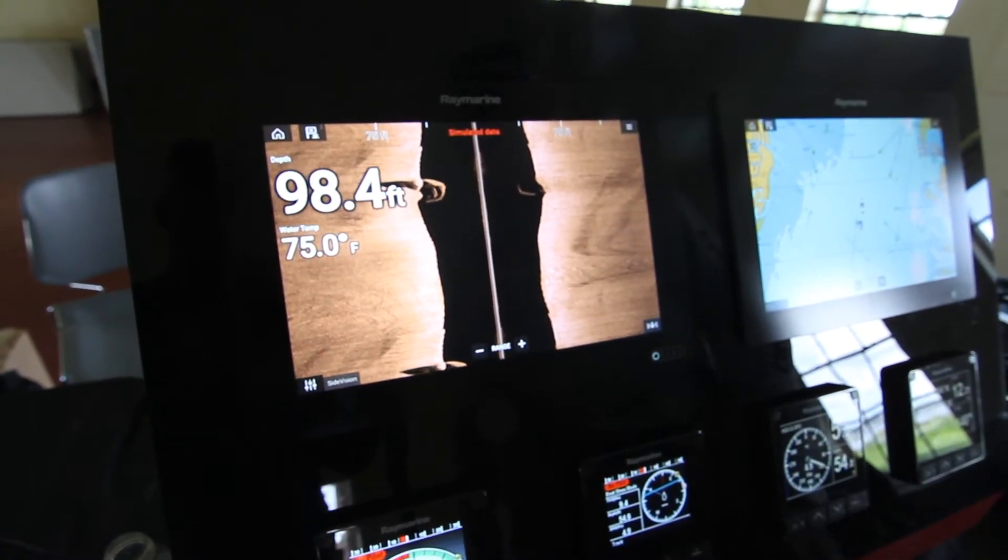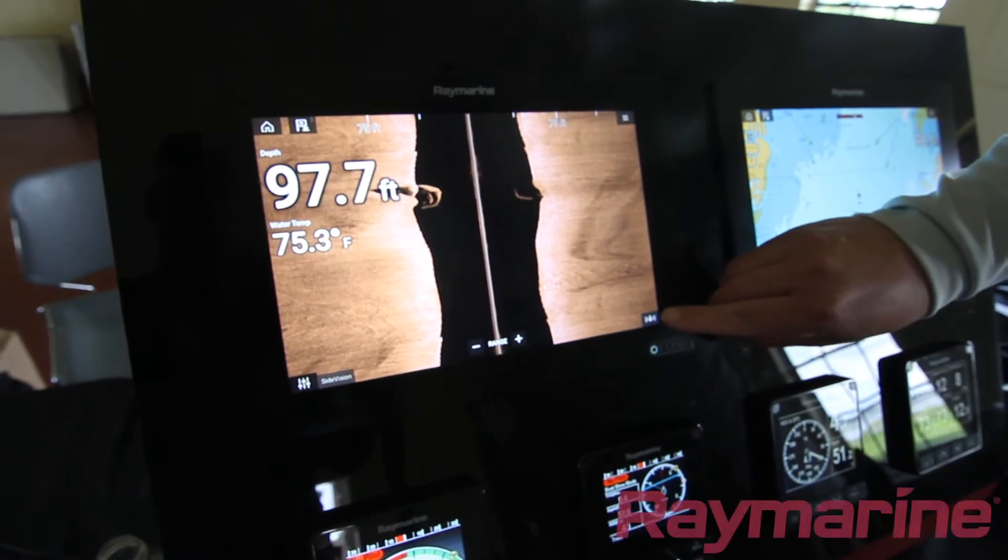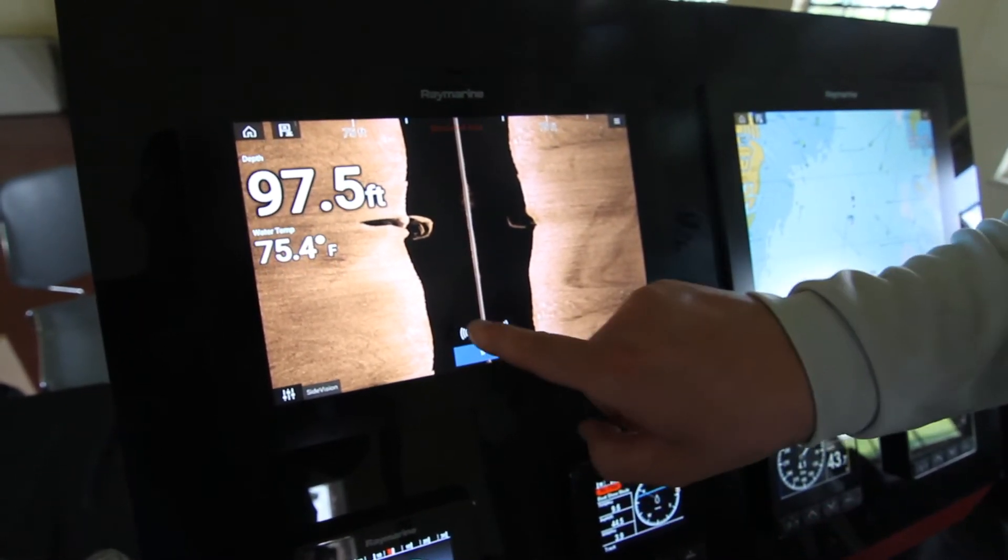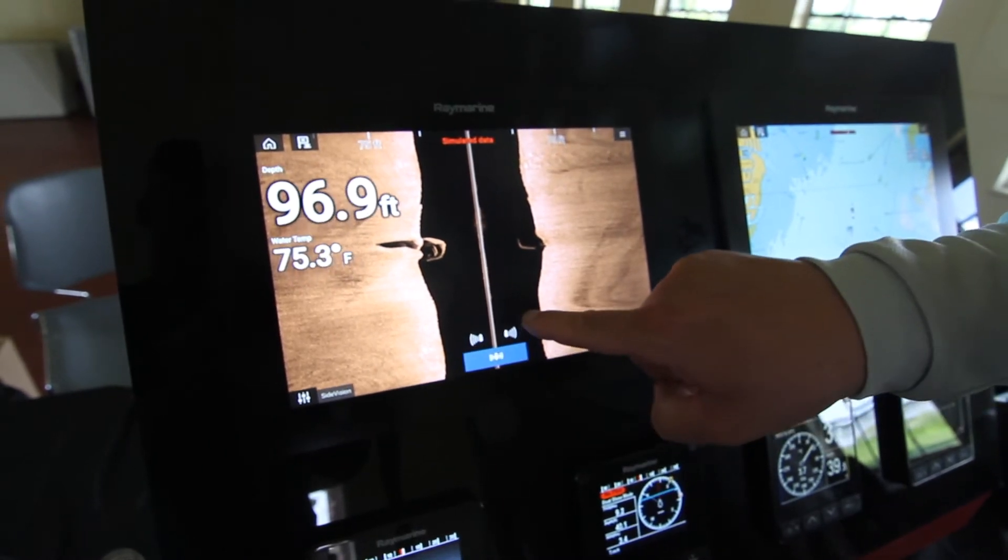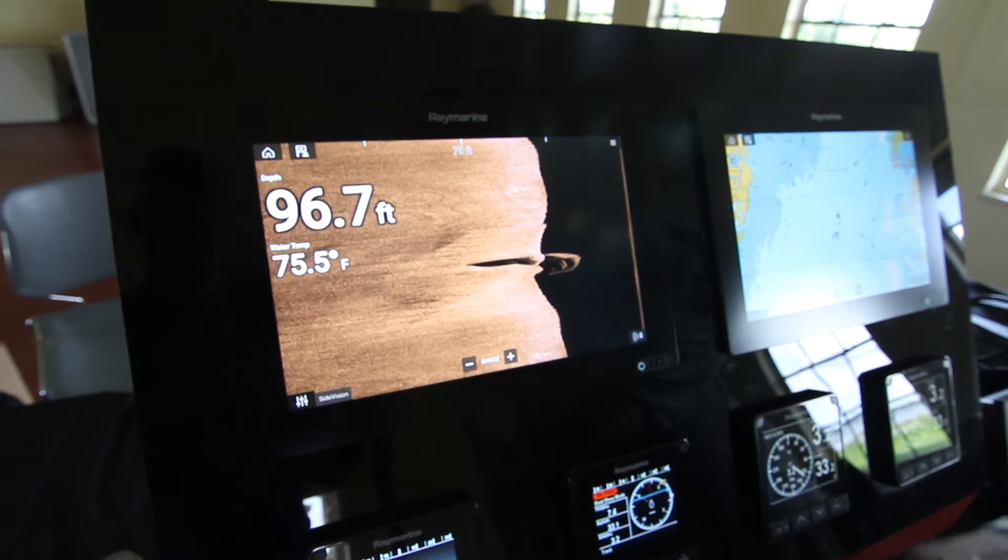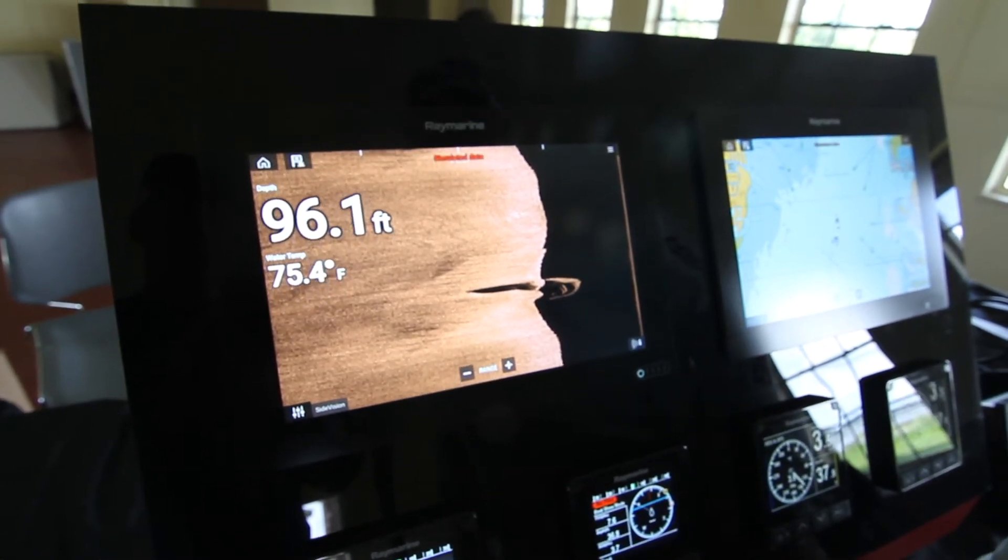Now, if you want to take a closer look in one direction or the other, we've got a little control here down on the corner, and that allows you to choose whether you want to look at just the left side array, just the right side array, or both. So right now we're in both. I touch this icon here. Now we're looking just out to the left, or the port side of the boat.